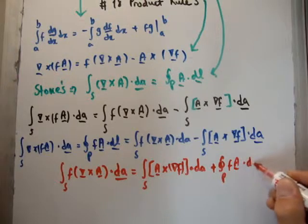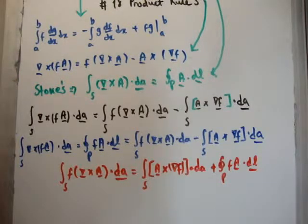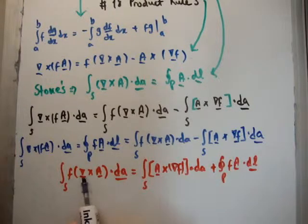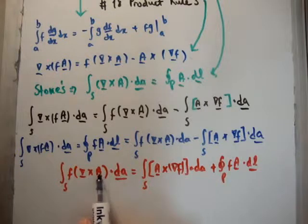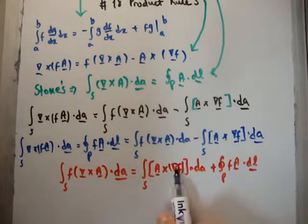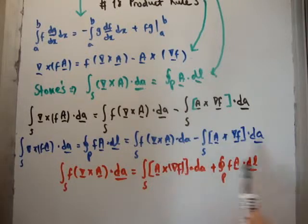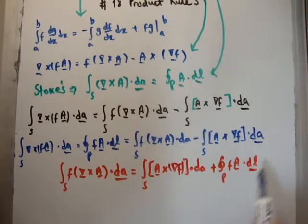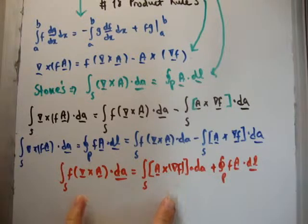So in general, what integration by parts says is that you can transfer the derivative, and it costs you a boundary term. So in this case, what we've done is we've transferred the derivative, we've transferred the nabla operator operating on A, so now the nabla operator operates on f, but it cost us our boundary term. In this case, it didn't cost us a minus sign, but it cost us a boundary term nonetheless. So this is a way of, we still have our surface integrals, or our double integrals, but we've gone to a closed line integral.